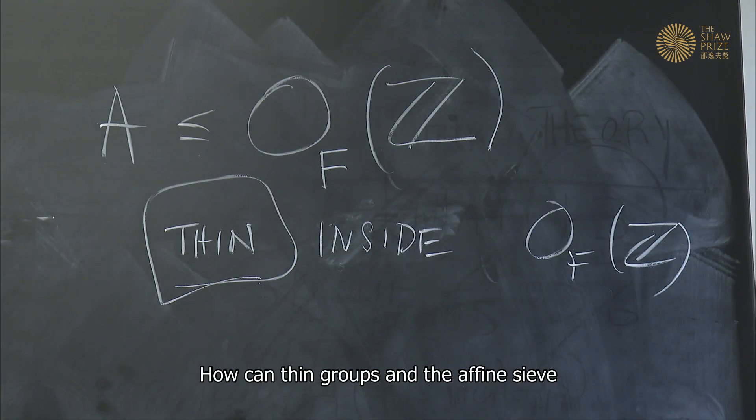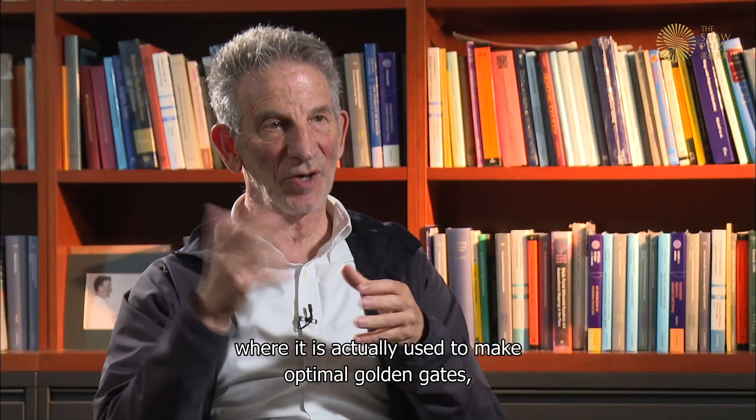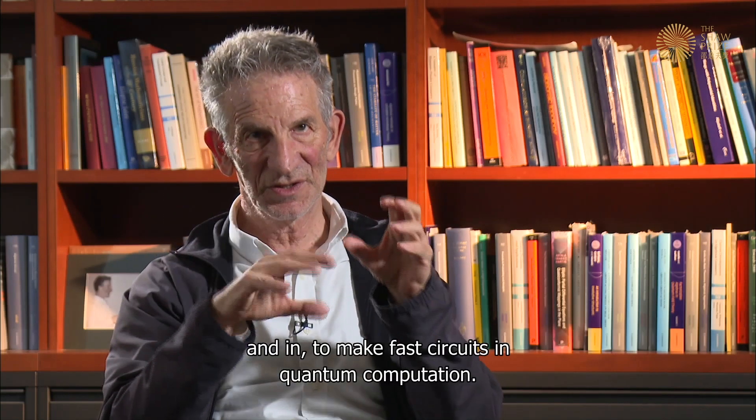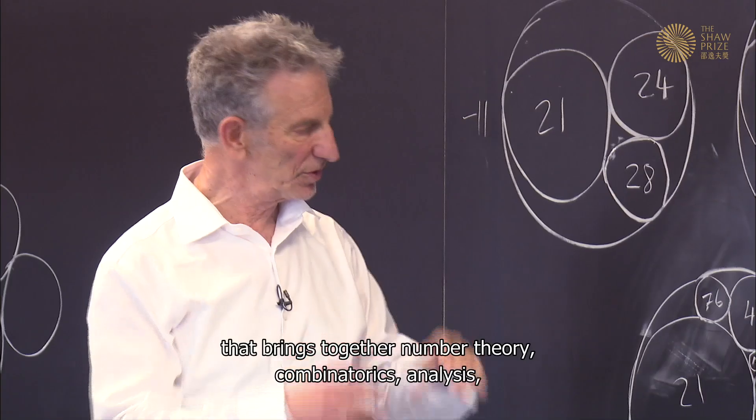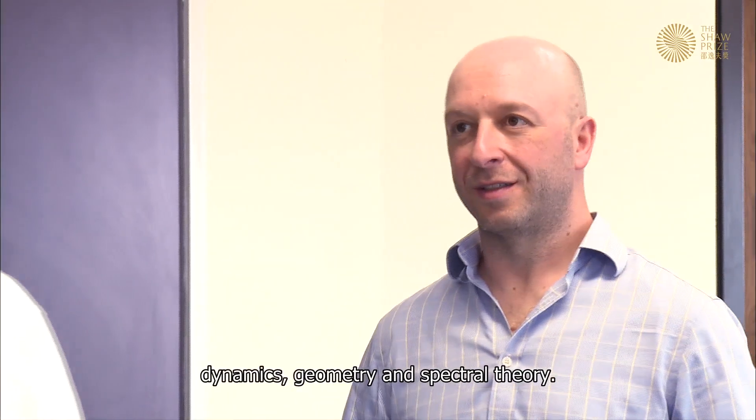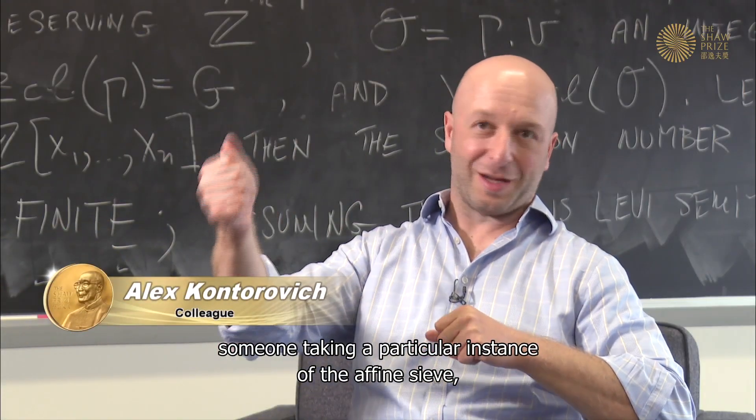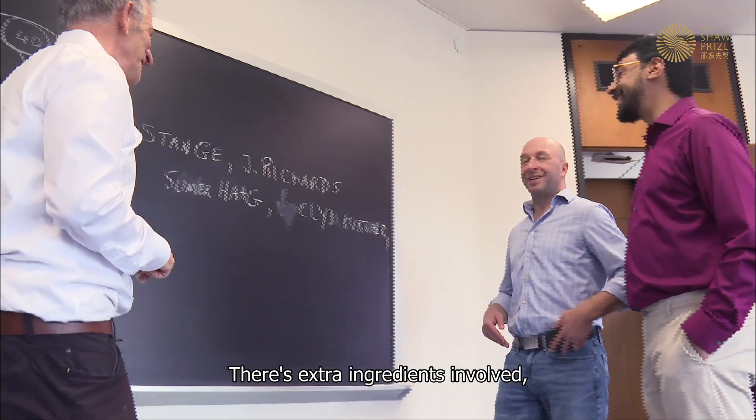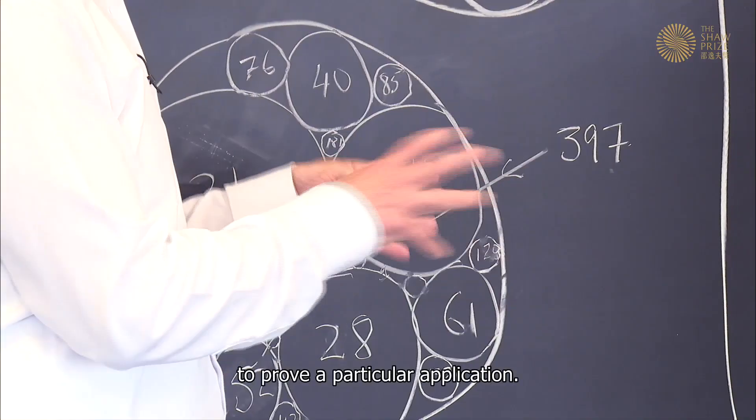How can thin groups and the affine sieve be used in real life? There's quantum computing where it is actually used to make optimal golden gates and to make fast circuits in quantum computation. His original and deep vision has launched a vast research program that brings together number theory, combinatorics, analysis, dynamics, geometry and spectral theory. So many of those applications are someone taking a particular instance of the affine sieve, analyzing it in greater detail. There's extra ingredients involved that you can make use of to get more information out of that setting to prove a particular application.